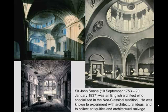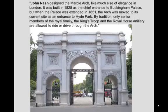Sir John Soane was an English architect who specialized in the neoclassical tradition. He was known to experiment with architectural ideas and to collect antiquities and architectural salvages. John Nash designed the Marble Arch, like much else of the elegance in London. It was built in 1828 as the chief entrance to Buckingham Palace, but when the palace was extended in 1851, the arch was moved to its current site as the entrance to Hyde Park. By tradition, only senior members of the royal family, the king's troops, and the royal horse artillery are allowed to ride or drive through the arch.